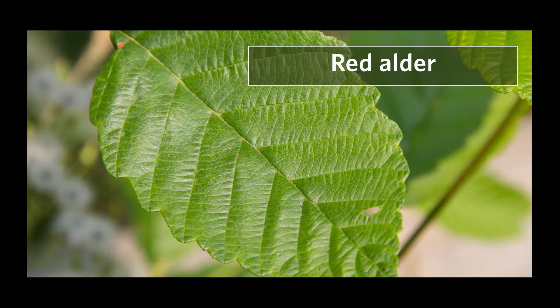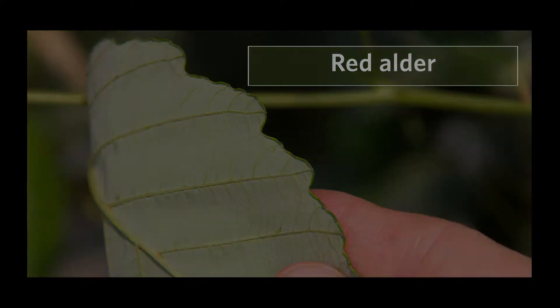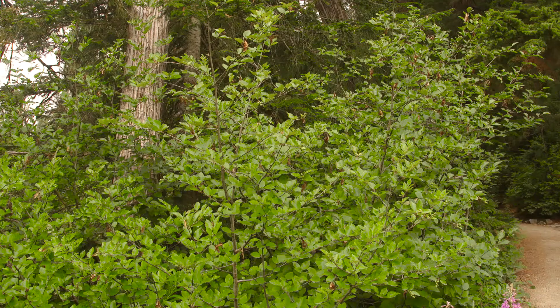Sitka alder looks like red alder when it's young, but red alder is not doubly toothed and the leaf margins on red alder curl under. The soil moisture regime is medium to wet and the soil nutrient regime is rich.